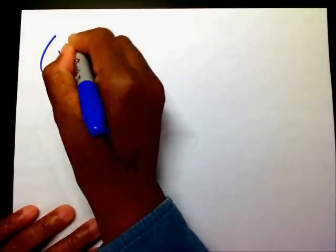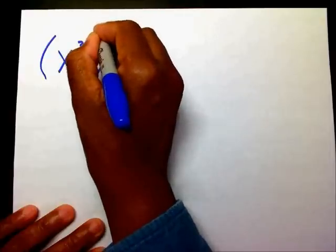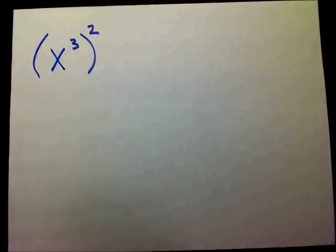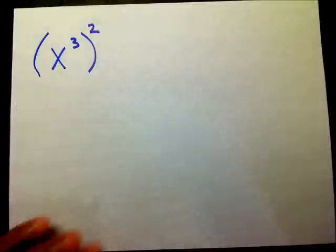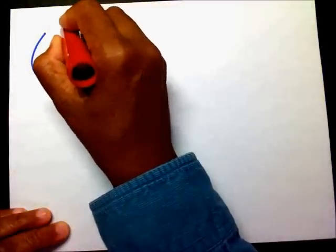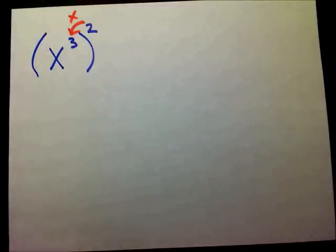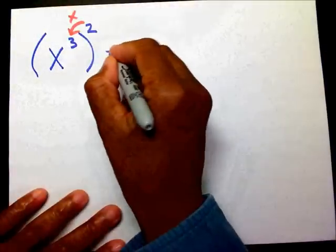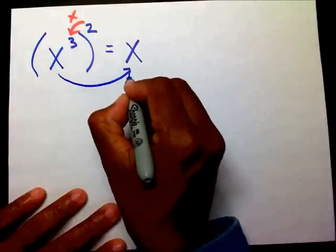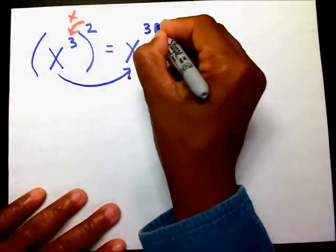So if I had x to the third power in parentheses raised to the second power — if I have an exponent on the inside of my parentheses and an exponent on the outside of my parentheses, I'm going to multiply those two exponents. I'm going to bring my x over, keep it the same, my base is going to stay the same, and I'm going to multiply three times two.